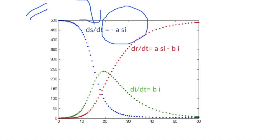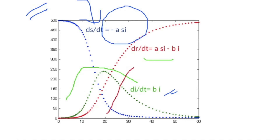The infected population, di/dt, has an initial rising trend: people get infected, suffer illness, and either recover or die based on the virulence of the organism. The recovered population, dr/dt, is the difference between susceptible and infected populations and shows a rising trend over time. As the epidemic progresses, populations get infected and either get cured or die; sometimes immunity develops, also counted as recovered.